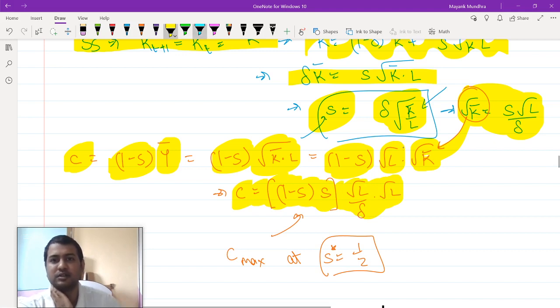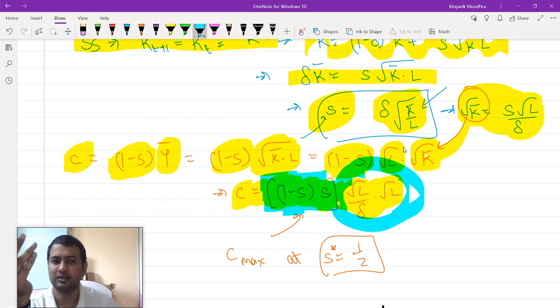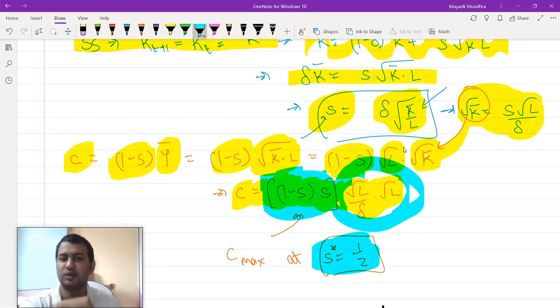The important thing to focus here is the right side is constant. The value of s which maximizes the left side will maximize the entire thing because the right hand side of this thing is anyway a constant in terms of savings. So the savings rate which maximizes is 1 minus s into s is basically s equals to half. That is your answer.